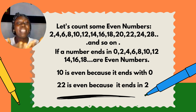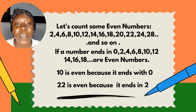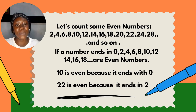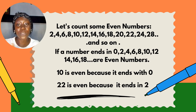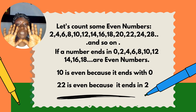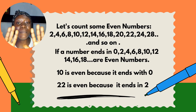We have ten. Ten is even because it ends with zero. Twenty-two is an even number because it ends with two. So all these numbers — for example, you count ten and you divide it by two.